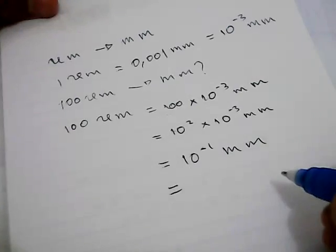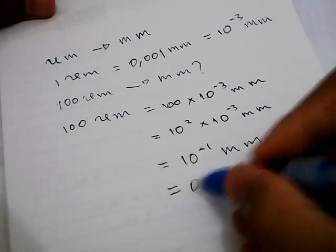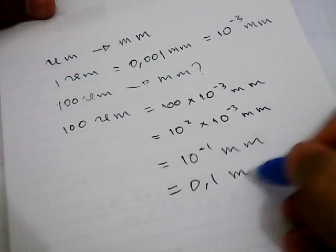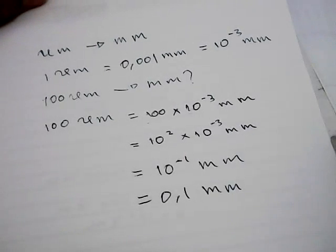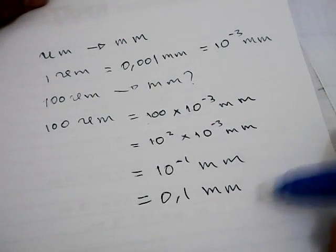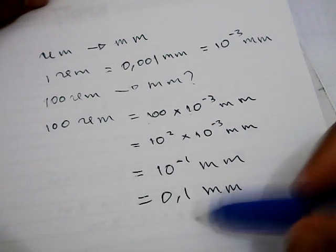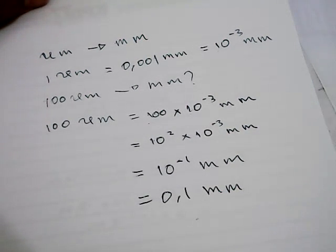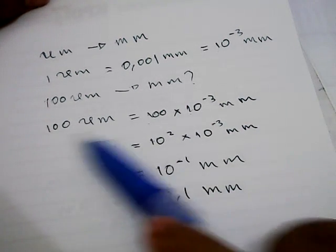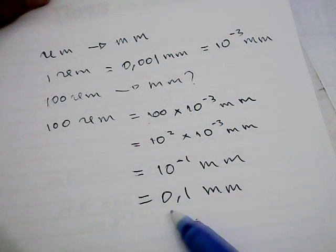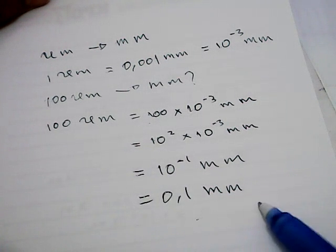In decimal, you can write it as 0.1 millimeter. That's the result of our problem solving. So 100 micrometers is equal to 0.1 millimeter.